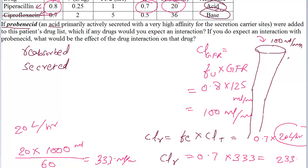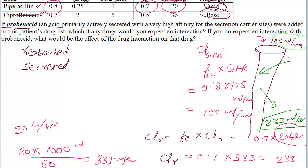So the input — the filtration — is 100 ml per minute, and the output is 233 ml per minute. Even though there is some reabsorption of the drug back into the bloodstream, the renal clearance is still 233 ml per minute. This means there must be predominant secretion to account for this difference. So piperacillin is predominantly secreted.